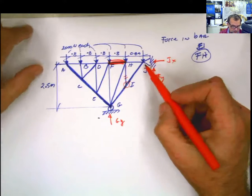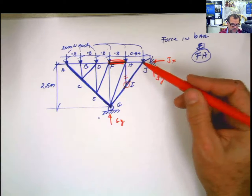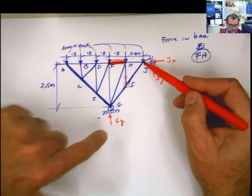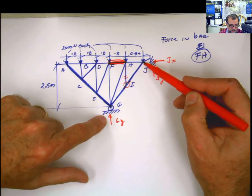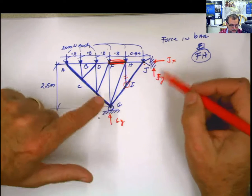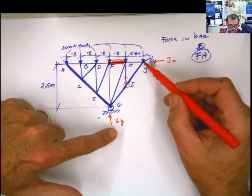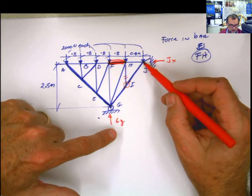So I have several things. Either I calculate reactions, which I can calculate by doing summation of moments at J equals 0, and then calculate Gy, and then doing summation of forces in x and y, and calculating Jy and Jx. And then I can come here to this joint and do the calculations of this joint, and transfer to that joint, and calculate the force FH.